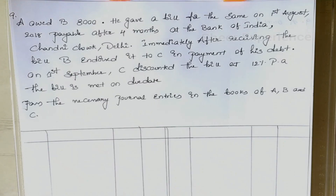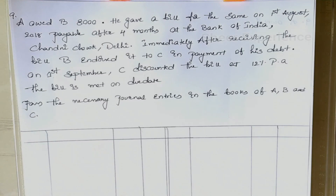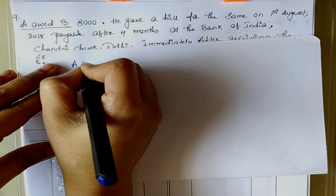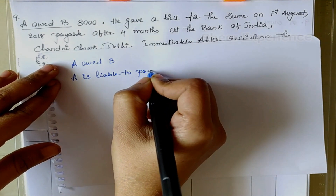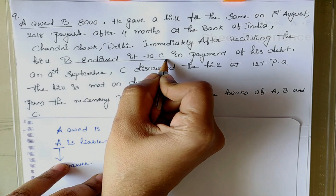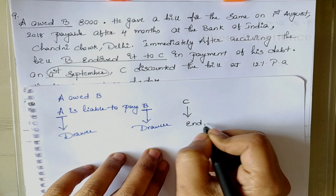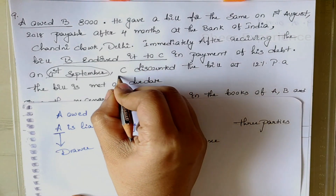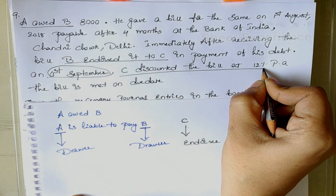Our next question: A owed B 8000. He gave a bill for the same on 1st August 2018 payable after 4 months at the Bank of India, Chandani Chowk, Delhi. Immediately after receiving the bill, B endorsed it to C in payment of his debt. On 1st September, C discounted the bill at 12% per annum. The bill is met on due date. Pass the necessary journal entries in the books of A, B and C. A owed B, so A is the drawee and B is the drawer. B endorsed it to C, so C becomes the endorsee — there are 3 parties involved.